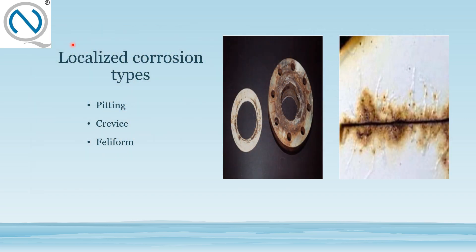There are three types of local corrosion. The first one is pitting, the second is crevice, and the third is filiform. If anyone asks about types of local corrosion, these are the basic three types: pitting, crevice, and filiform.